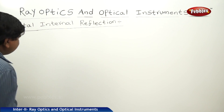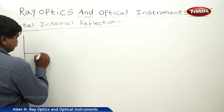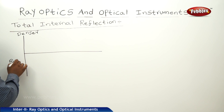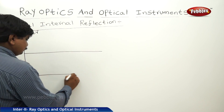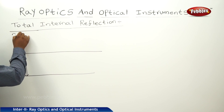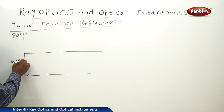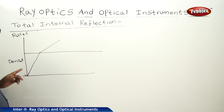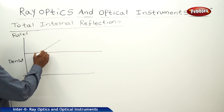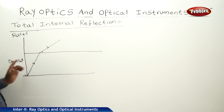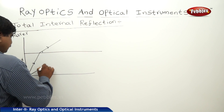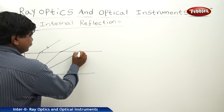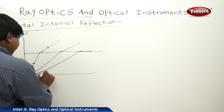To demonstrate total internal reflection, consider a denser medium below and a rarer medium above. When light travels from denser to rarer medium, it moves away from the normal. As the angle of incidence increases, the refracted ray bends further from the normal. At the critical angle, the refracted ray merges with the interface at 90 degrees.